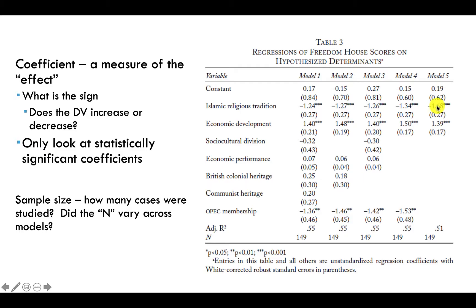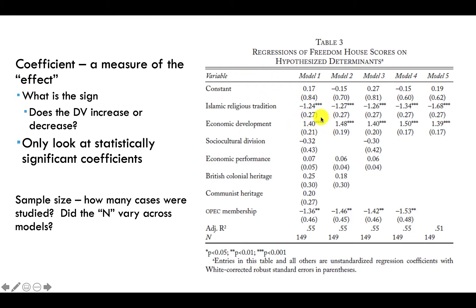All I want you to understand beyond that is whether the results are positive, as in the case of economic development, or negative, as in the case of Islamic religious tradition. What this is saying is that countries with an Islamic religious tradition are less likely to be democracies than countries that do not — that's what a negative relationship is. Conversely, countries with higher levels of economic development are more likely to be democracies or have higher levels of democracy — that's what this positive coefficient means.